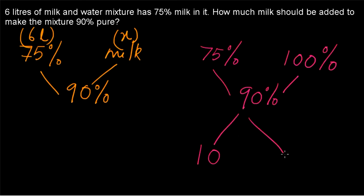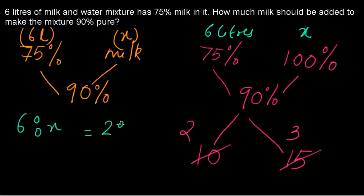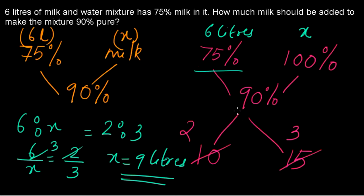Applying the rule of allegation: the difference between 90 and 100 is 10, and the difference between 75 and 90 is 15, giving a proportion of 10:15, which simplifies to 2:3. We have 6 liters of the 75% mixture and x liters of milk to add, so 6:x = 2:3, giving x = 9 liters. Therefore, 9 liters of milk should be added to the 75% milk solution to obtain a 90% pure milk solution.